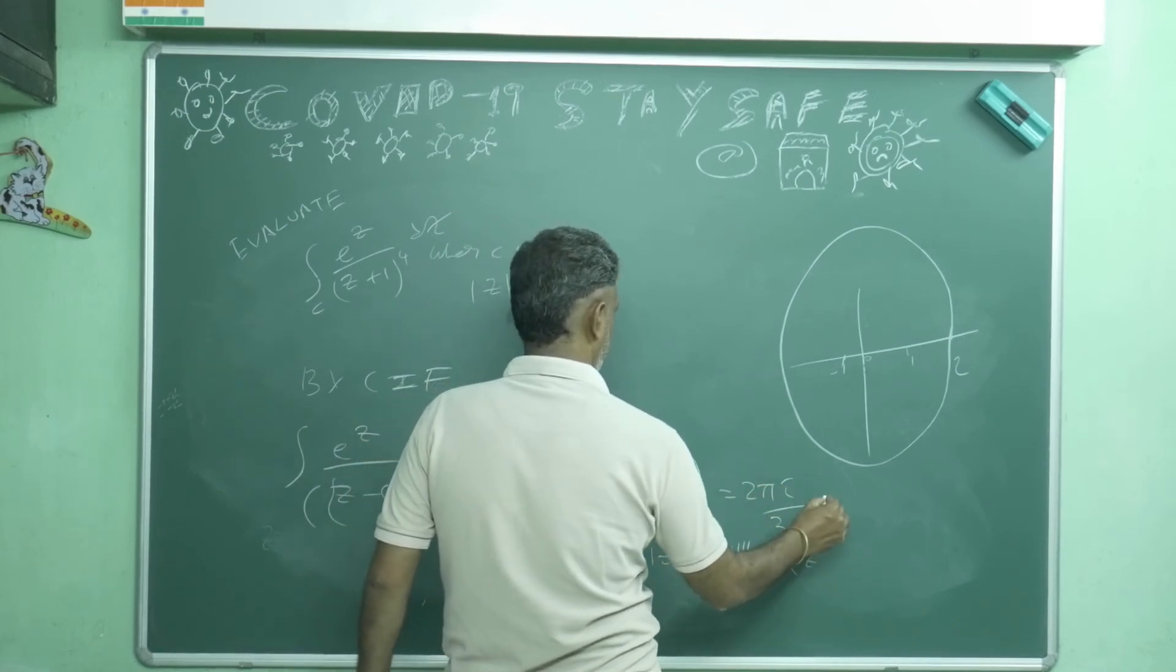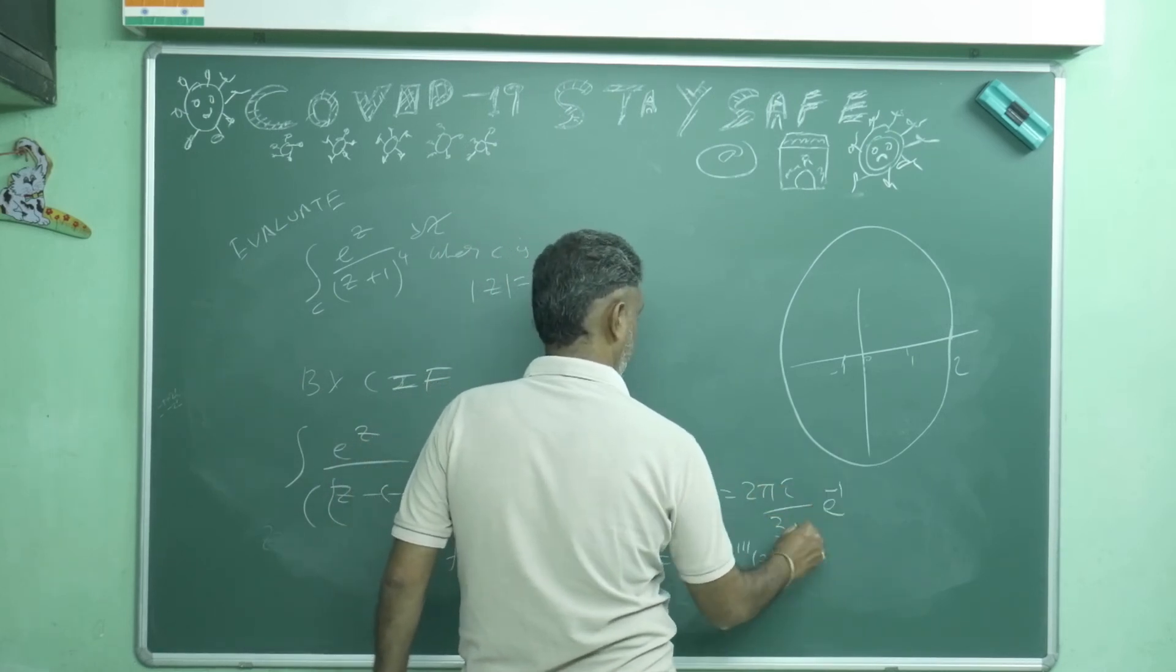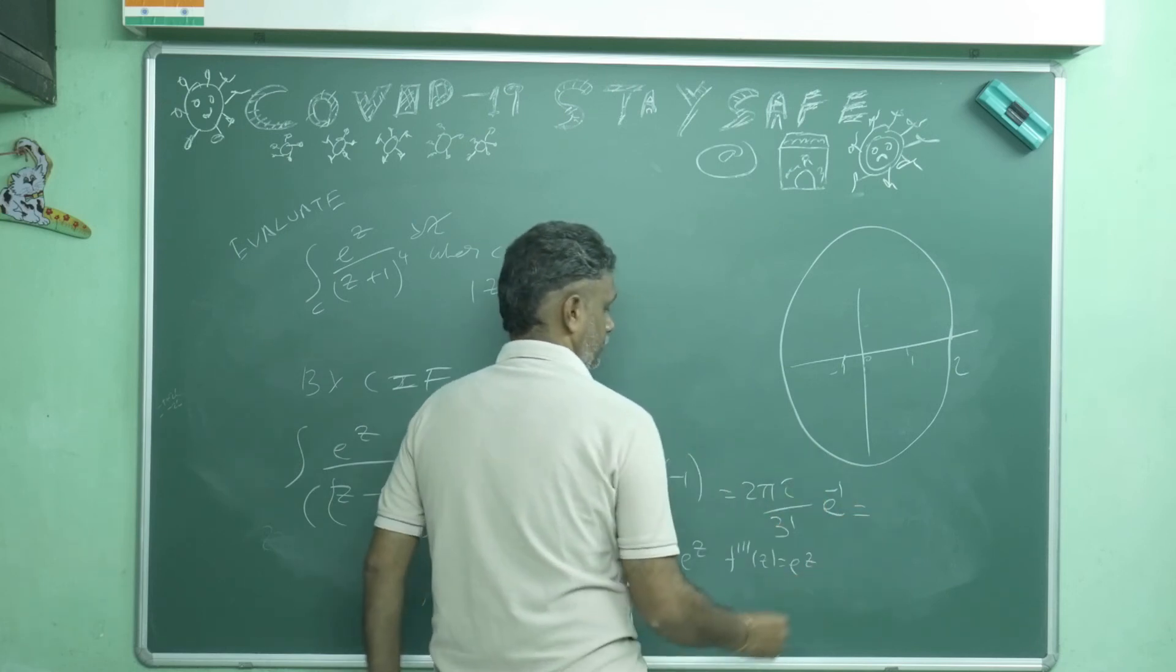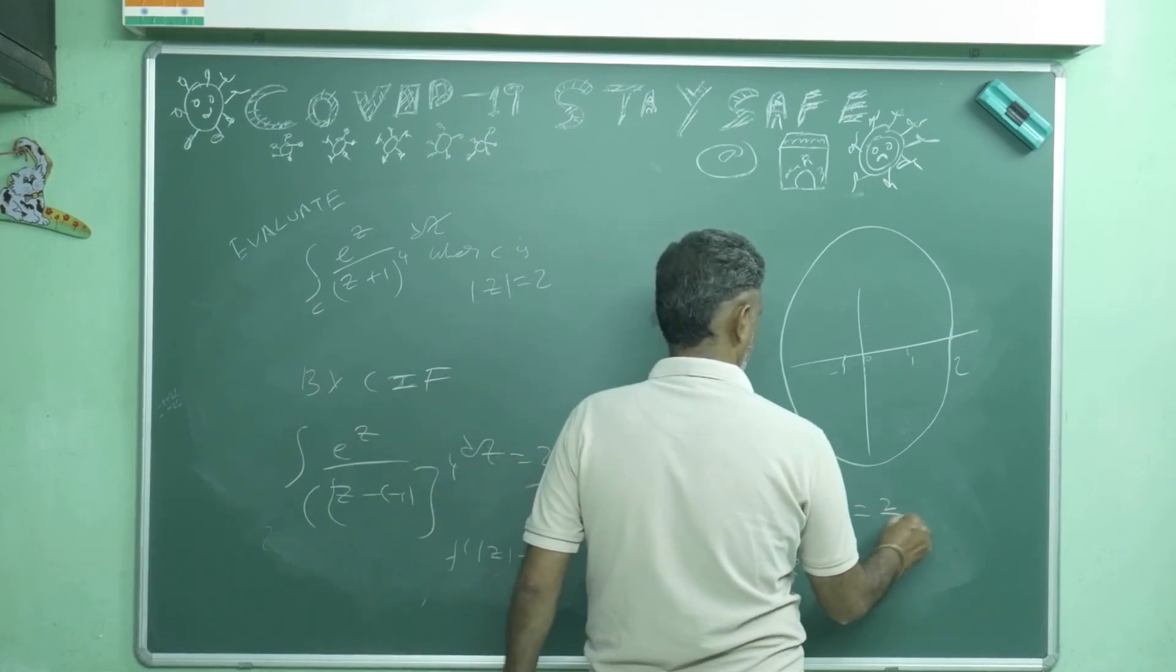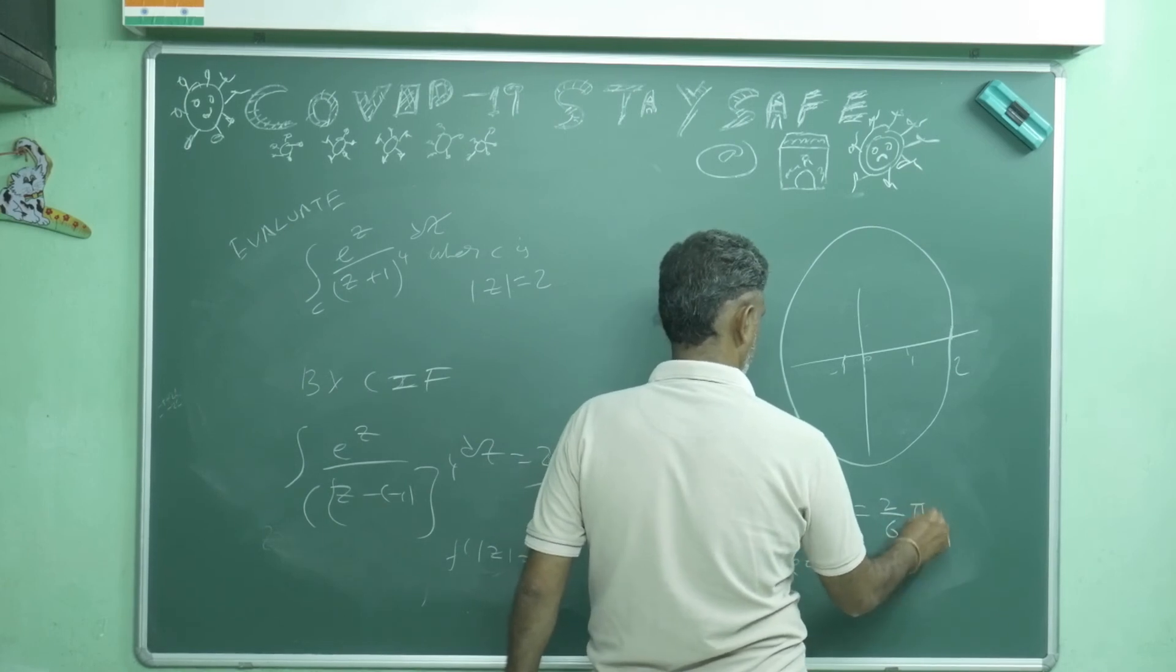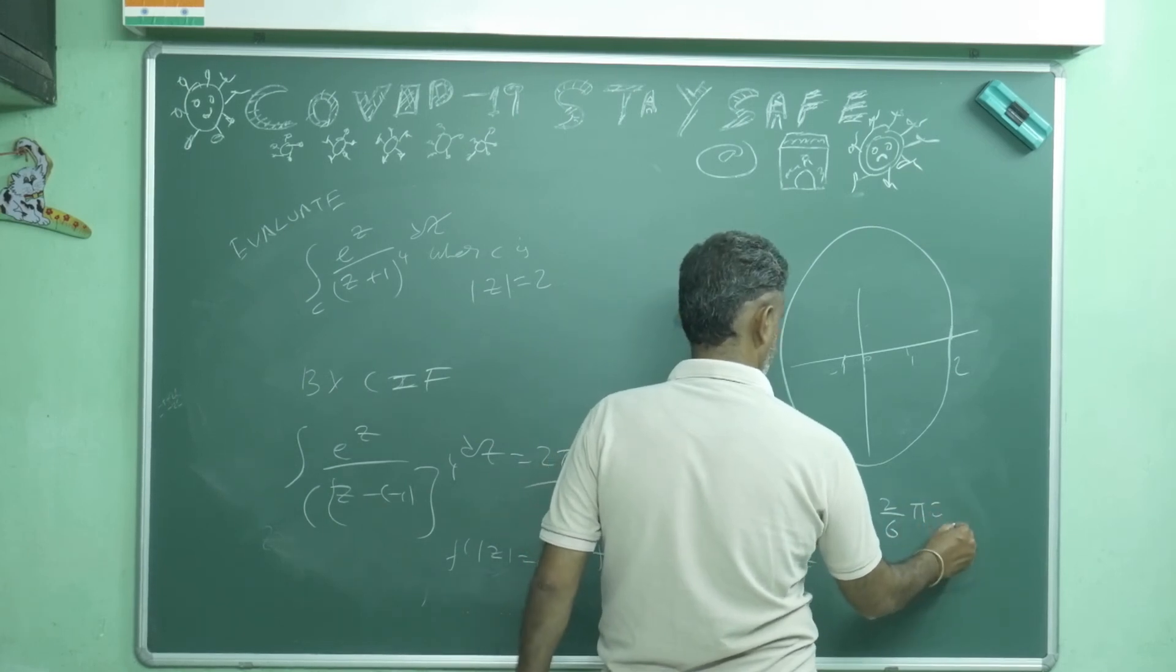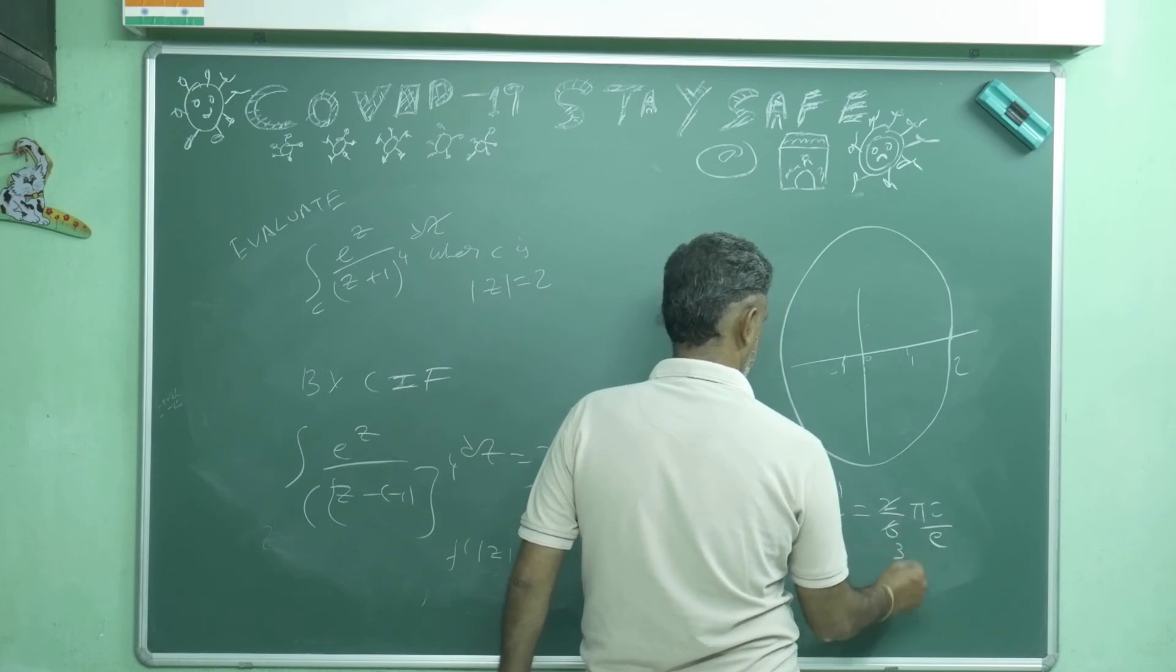2 pi i by 3 factorial, that is 6, times e power minus 1. 2 by 6 pi i by e. This answer you can take 3 times.